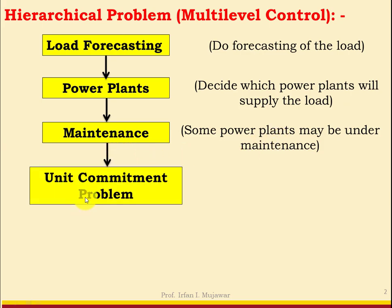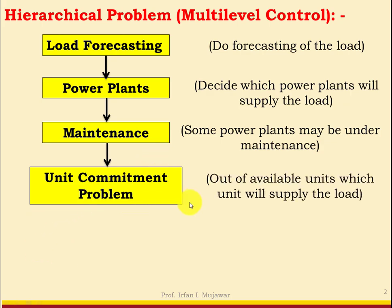Then next comes the unit commitment problem. Out of available units, which unit will supply the load is the unit commitment problem. For example, suppose there are 6 thermal units in operation and one is under maintenance. Out of the remaining 5 units, which units will supply the load is the unit commitment problem.